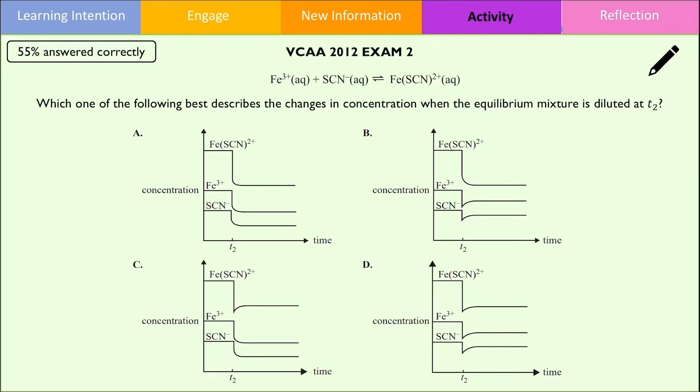In the second question, we need to select the appropriate concentration time graph when the equilibrium mixture was diluted at T2. Give yourself a minute to answer this question and then resume the video to check your understanding.